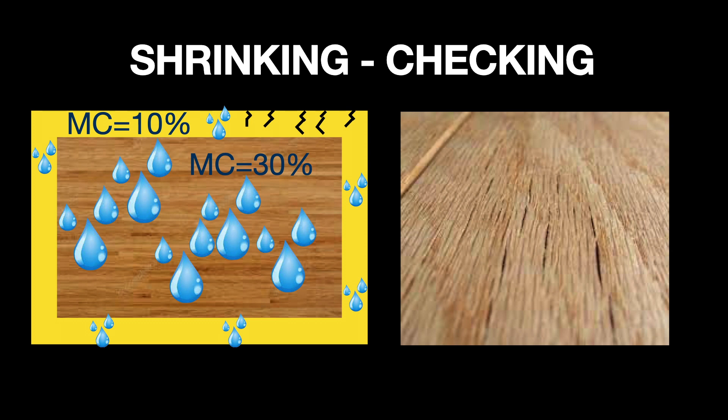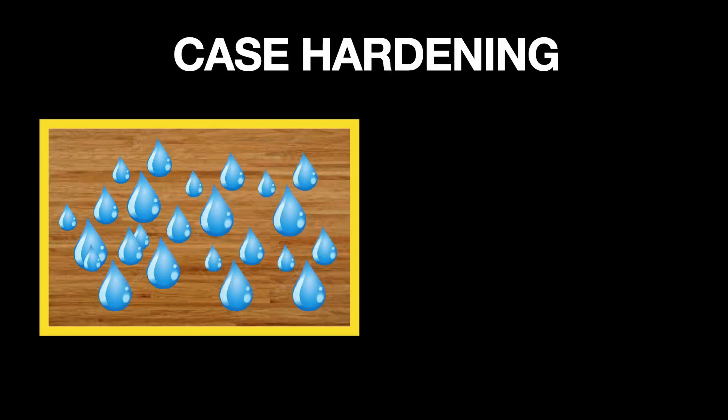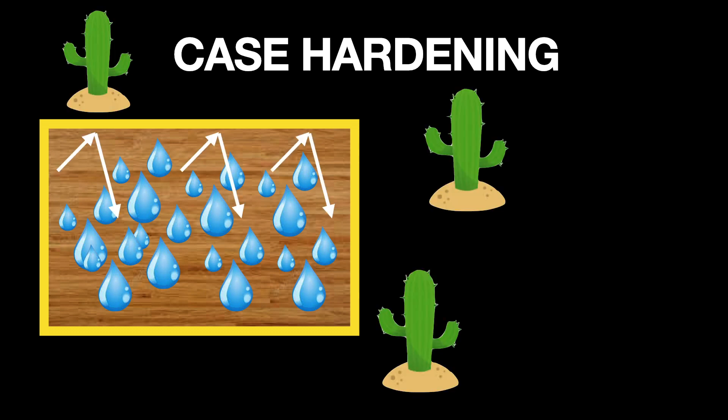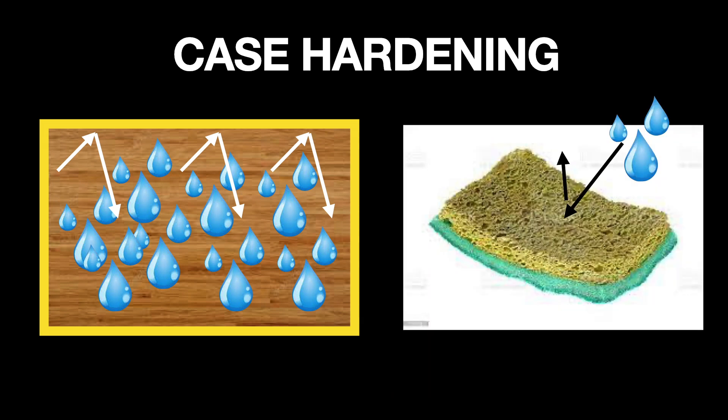With proper drying, this defect can be avoided. Over drying the surface is also called case hardening. This is important to know because case hardening traps in the water we're trying to remove. Water does not want to move through a dry surface — it's the same reason a dry sponge does not absorb water.